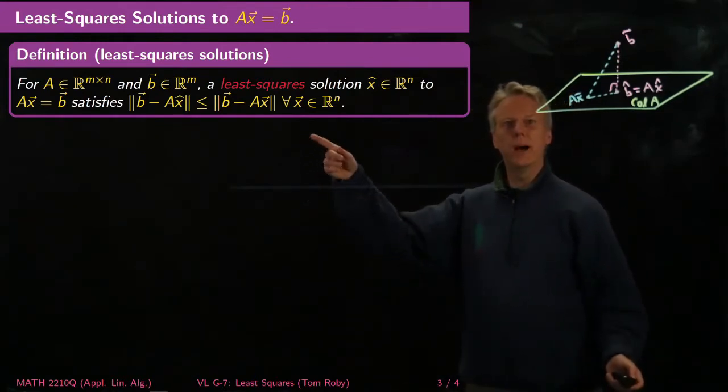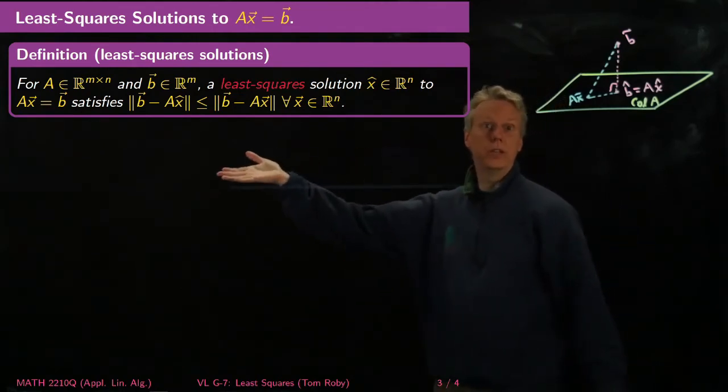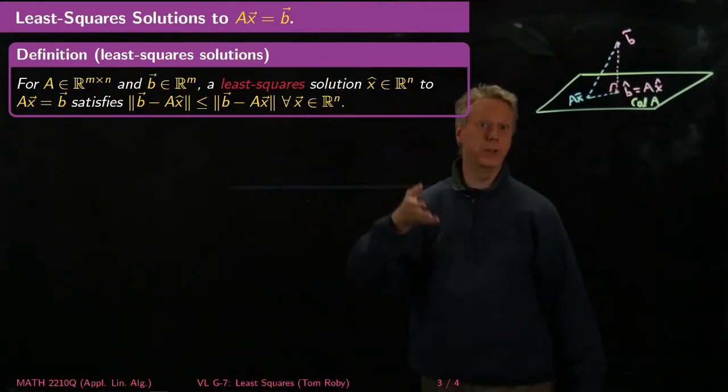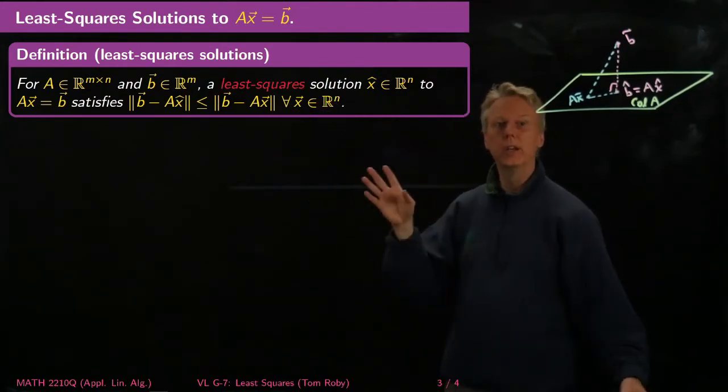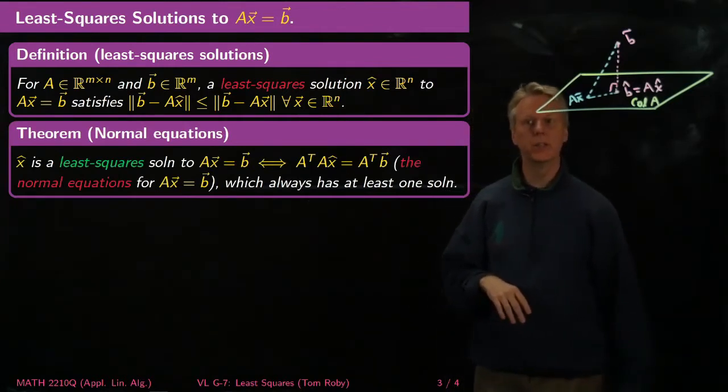So this is a bit of an inconvenient thing to work with, though, because how do you know that you've found an X hat which satisfies this kind of inequality where you'd have to check infinitely many values?